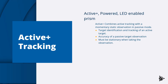Active Plus tracking is very similar to active mode and also needs a powered active prism with LEDs. Active Plus combines active tracking with a momentary static observation in passive mode. This has the benefit of target identification and tracking of an active target, plus the improved accuracy of a passive target observation. You must be stationary when taking the observation.